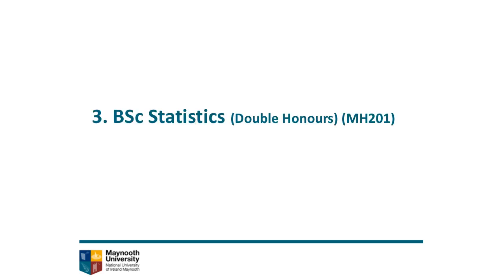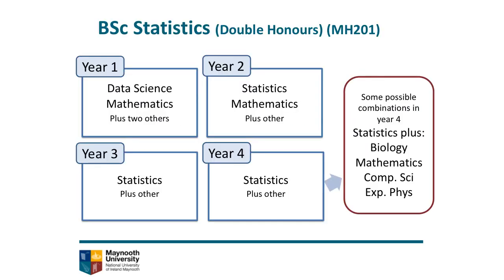Now introducing our double honors BSc Statistics program. You'll start in first year by taking data science, maths, and two other subjects of your choice. Then you will drop one of those two extra subjects and carry on with stats, maths, and the subject you haven't dropped. Finally, you'll take statistics and that other subject in years three and four to complete your double honors program. Some interesting combinations could be statistics and applied mathematics, or statistics and computer science. I myself am trained in stats and biology, and this has helped me a lot when trying to understand applied biological problems and propose statistical solutions to analyze the data.